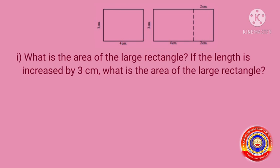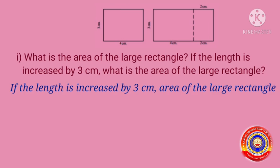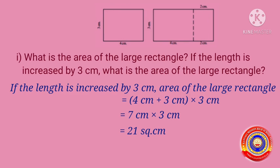Now we have to find the area of the large rectangle if the length is increased by 3 cm. If the length is increased by 3 cm, area of the large rectangle is equal to length into breadth. That is, 4 cm plus 3 cm is the length, into breadth 3 cm. Then 4 cm plus 3 cm is equal to 7 cm, and 7 cm into 3 cm is equal to 21 square cm.